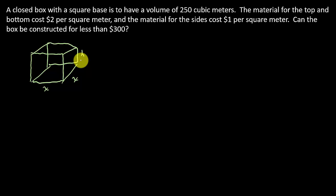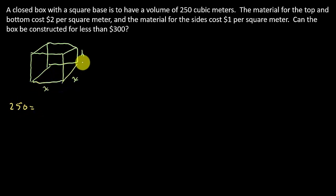Let's come up with the function we want to maximize or minimize and write down the information they give us. A closed box with a square base is to have a volume of 250 cubic meters, so the volume equals 250. The volume of this box is this side times this side times the height: X times X is X squared, times the height H. So Volume = X²H = 250.